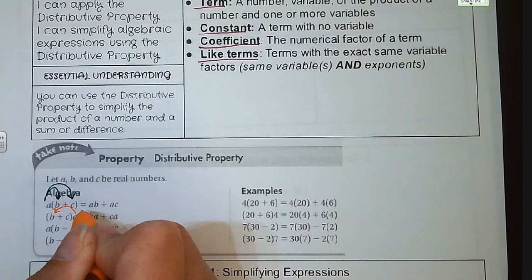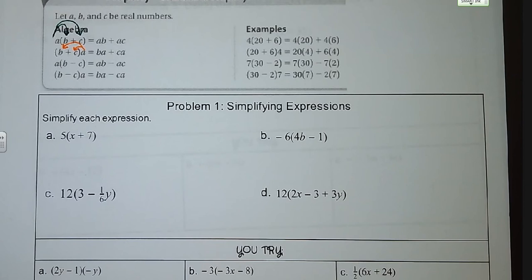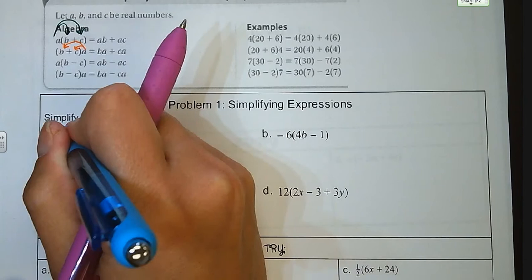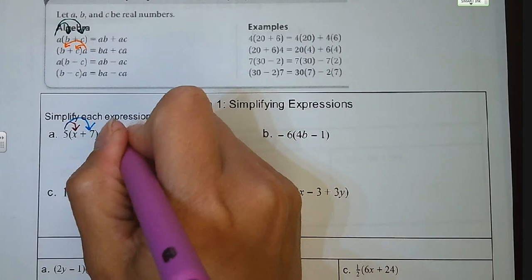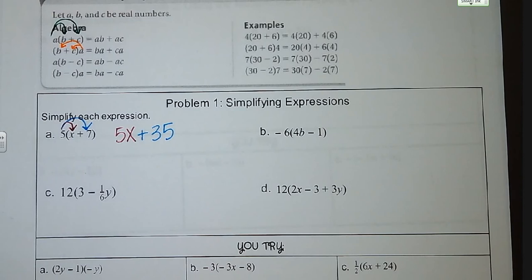Problem number one, simplifying expressions. We want to simplify each expression using the distributive property. For letter A, we are distributing 5 times X and 5 times 7. So 5 times X gives us 5X, and 5 times 7 gives us 35. That's as simple as we can go. Those are not like terms — they do not have the same variable factors, so they cannot be combined. That's our final answer.